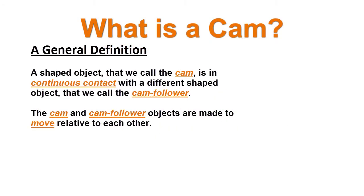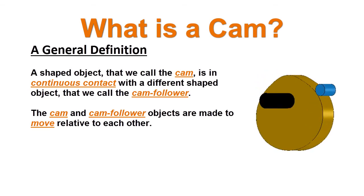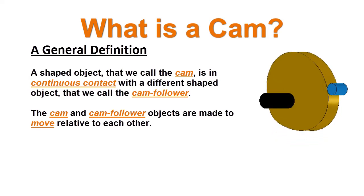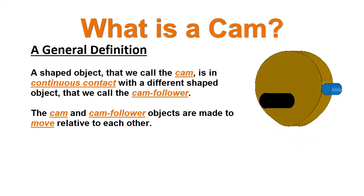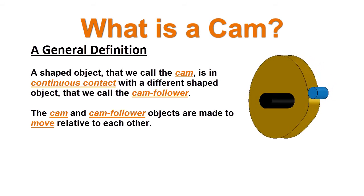What is a cam? A cam is a shaped object — we call it the cam — that is usually in continuous contact with another shaped object that we call the cam follower. The cam and the cam follower are made to move relative to each other, so one moves the other.